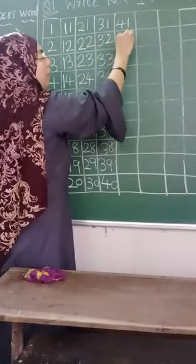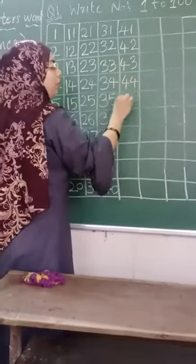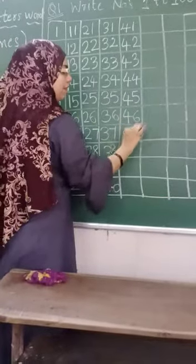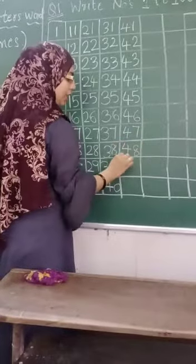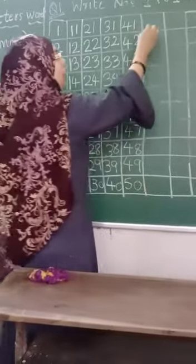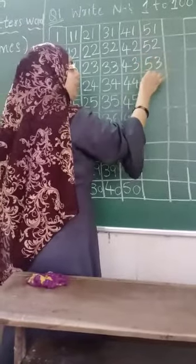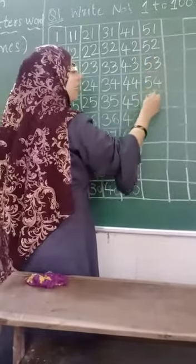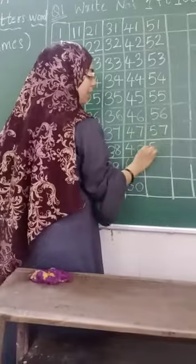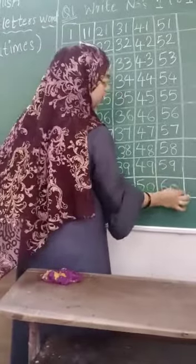4, 1, 41. 4, 2, 42. 4, 3, 43. 4, 4, 44. 4, 5, 45. 4, 6, 46. 4, 7, 47. 4, 8, 48. 4, 9, 49. 5, 0, 50. 5, 1, 51. 5, 2, 52. 5, 3, 53. 5, 4, 54. 5, 5, 55. 5, 6, 56. 5, 7, 57. 5, 8, 58. 5, 9, 59. 6, 0, 60.